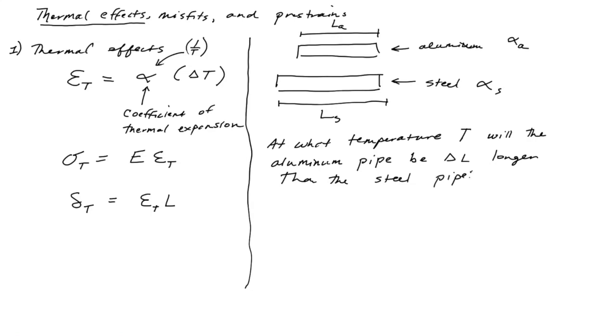So the steel pipe starts out longer than the aluminum pipe, but the coefficient of thermal expansion for aluminum is greater than steel. And so as it's heated up, the aluminum will grow in length faster than the steel. And eventually they will reach the same length and the aluminum will get longer. We want to know at what temperature will they be the same length?